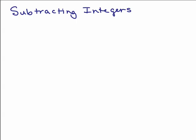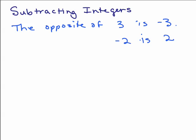First I'm going to go over some methods for subtracting and then I'm going to show you models so you can understand the reason these methods work. The first thing we need to know is what the opposite of a number is. The opposite of 3 is negative 3 — you simply change signs. So the opposite of negative 2 is positive 2, the opposite of negative 1 half is positive 1 half, the opposite of 3.9 is negative 3.9, et cetera. We're going to be using the idea of the opposite of a number.